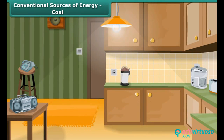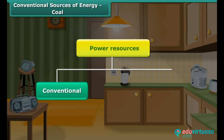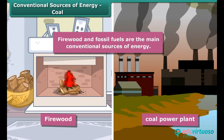We have seen that power is required to run daily use items. Power resources are broadly categorized as conventional and non-conventional resources. Conventional resources of energy are those which have been in use for a long time. Firewood and fossil fuels are the main conventional sources of energy.